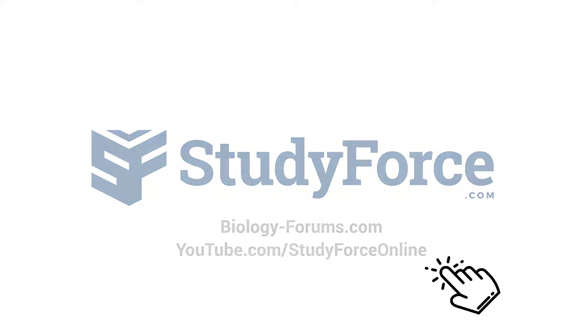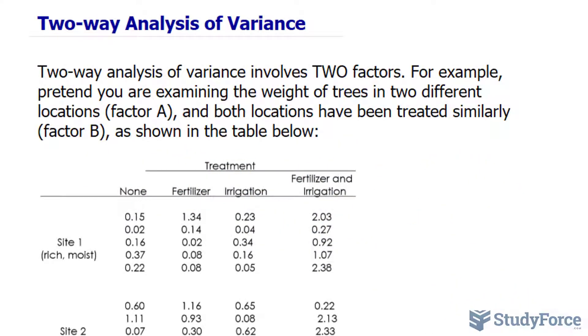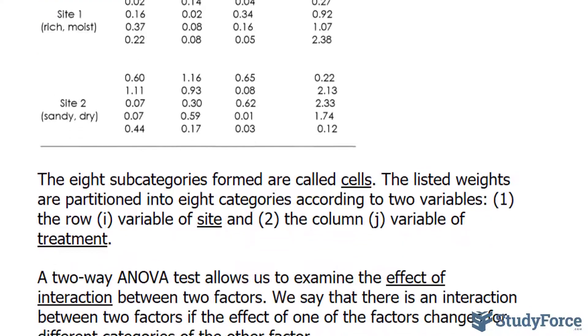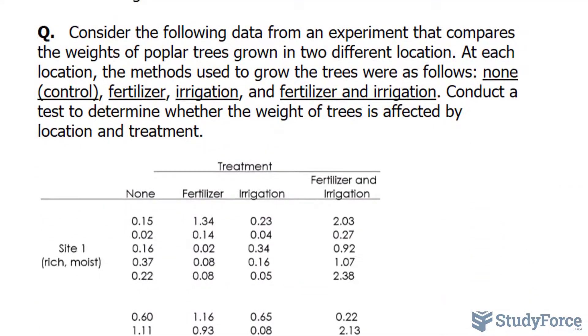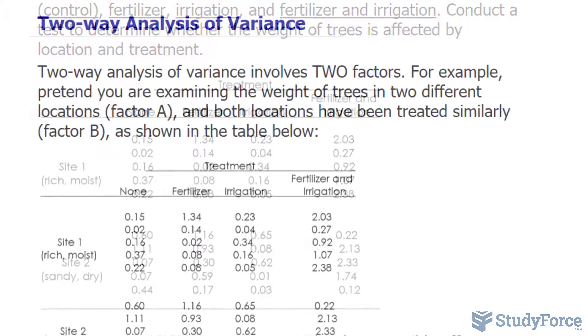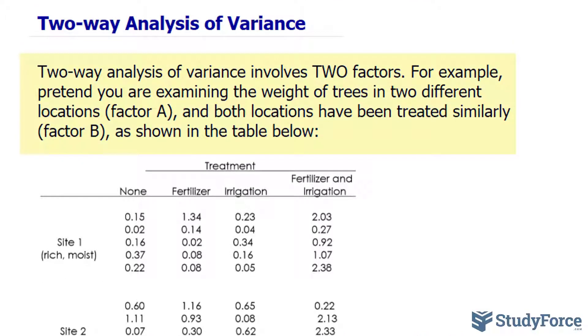In this lesson, we'll look at how to perform the two-way analysis of variance all by hand. We'll do this by answering the following question. But before we begin, unlike the one-way ANOVA, the two-way ANOVA test, as the name implies, involves two factors.